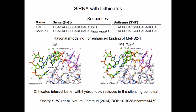The authors attribute this greater activity to the greater affinity of the dithioate-bearing siRNA to the RNA silencing complex RISC. Their computer model is shown on this slide. On the left, they show their model of the unmodified siRNA interacting with the protein. On the right, there is a model of the dithioate portion of their dithioate-modified siRNA.